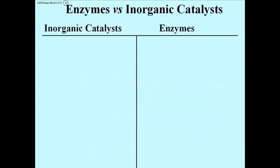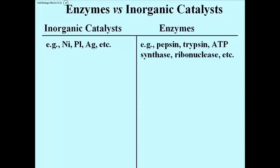Let's compare enzymes, biological catalysts, with some inorganic catalysts. Inorganic catalysts include many of the rare metals — nickel, platinum, silver, and so on — and even hydrogen gas is a catalyst. Typical enzymes have names like pepsin and trypsin. These are digestive enzymes originally discovered in the stomach, in the case of pepsin, and in the small intestine but coming from the pancreas, in the case of trypsin.